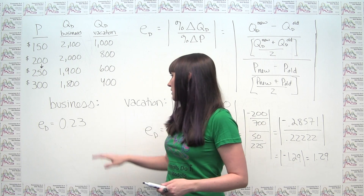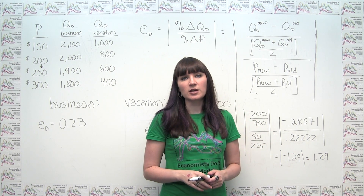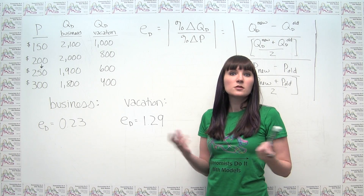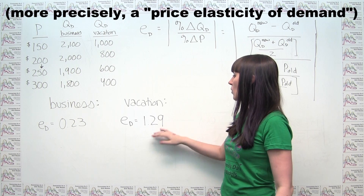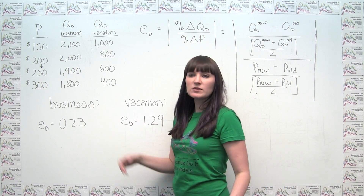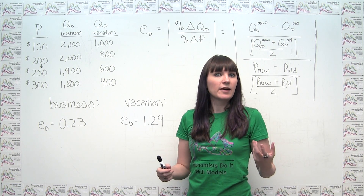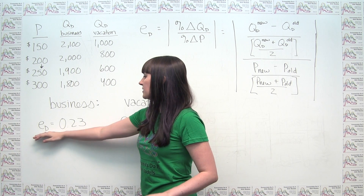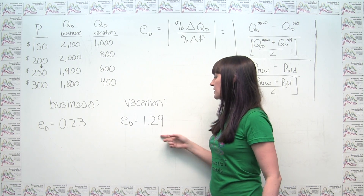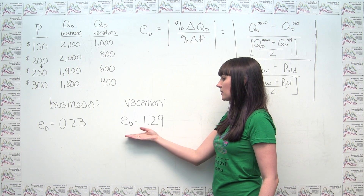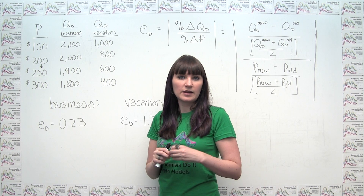Now we're ready to compare the two numbers. We got an elasticity of demand of 0.23 for business travelers and 1.29 for vacation travelers. We categorize elasticity based on whether it's bigger or smaller than 1 in absolute value. Because 0.23 is less than 1, business traveler demand is inelastic. Because 1.29 is greater than 1, vacation traveler demand is elastic. If the elasticity were exactly 1, we would say it has unit elasticity.